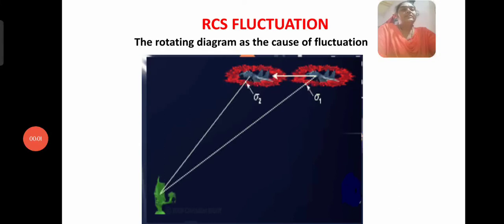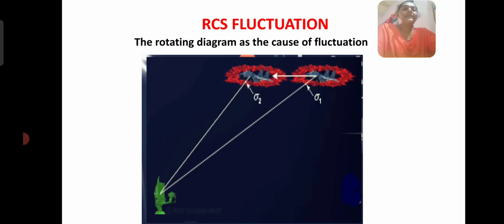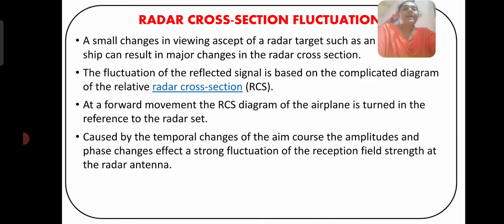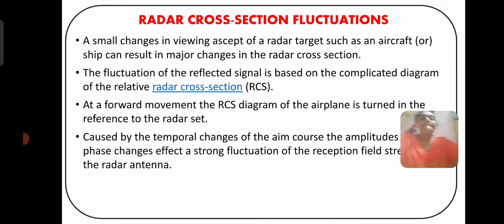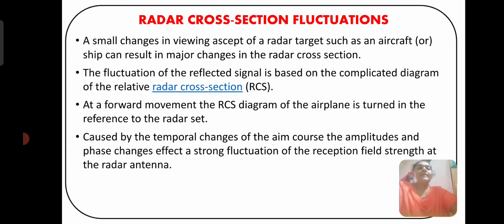Today we are going to discuss RCS fluctuations. The rotating diagram is the cause of the fluctuations. The main cause of RCS fluctuation is aspect angle.